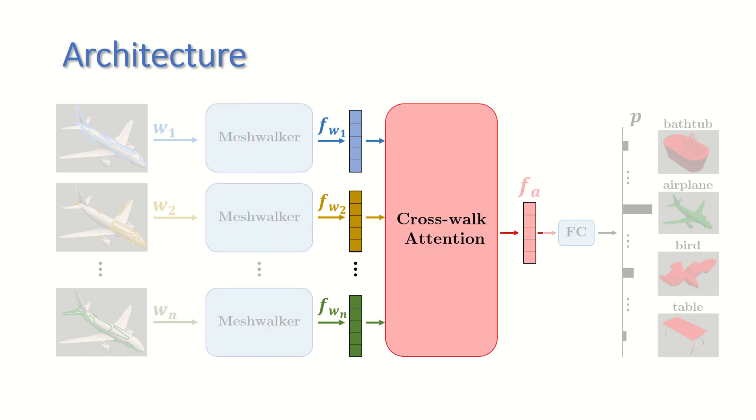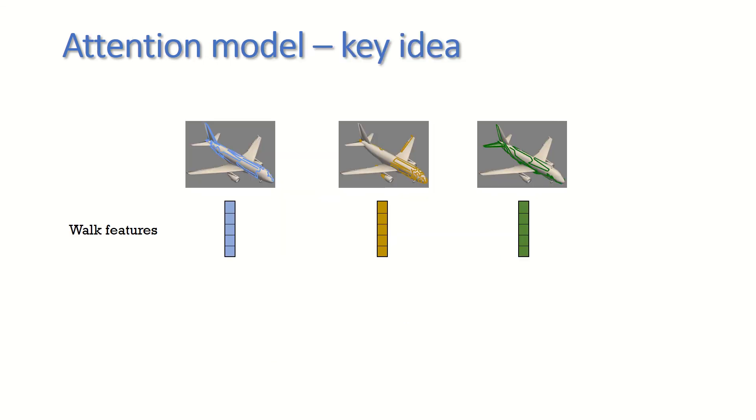Our proposed cross-walk attention gets n feature vectors and learns how to generate a single feature vector that describes the mesh. In this descriptor, the important information from all the walks are aggregated.